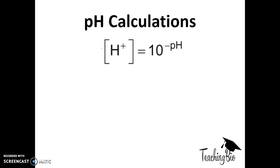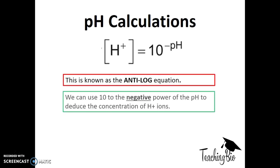We can equally find out the concentration if we have the pH using the anti-log equation. Here we do 10 to the negative power of the pH to find out the concentration of H+ ions.